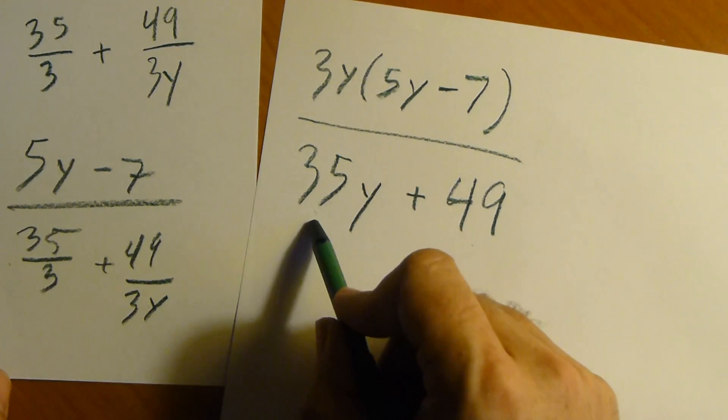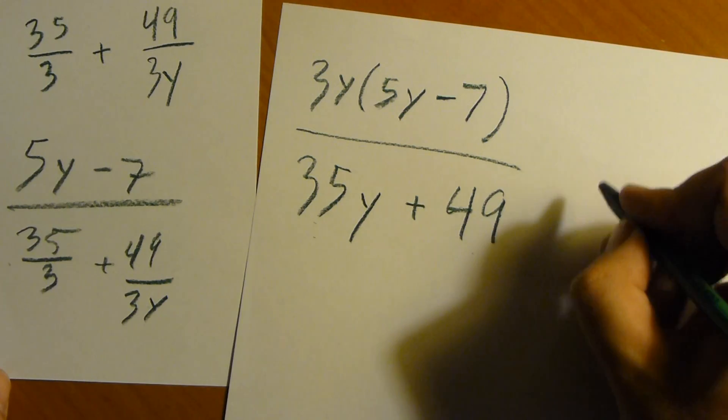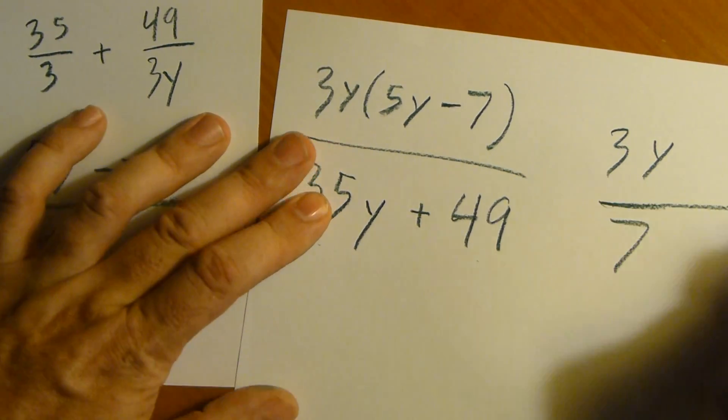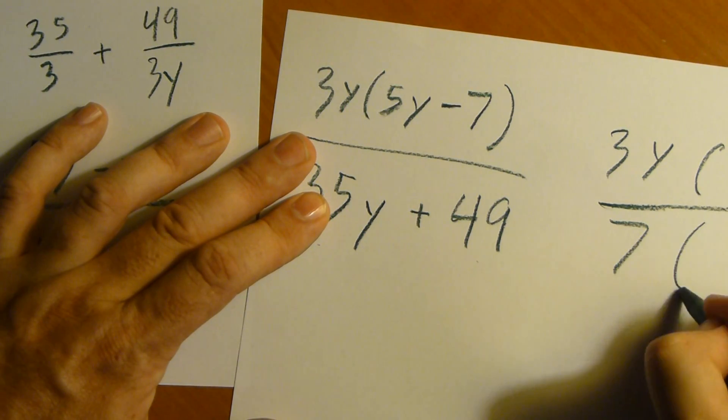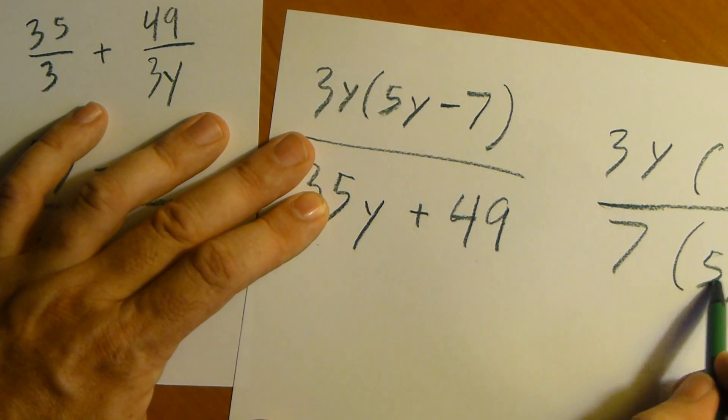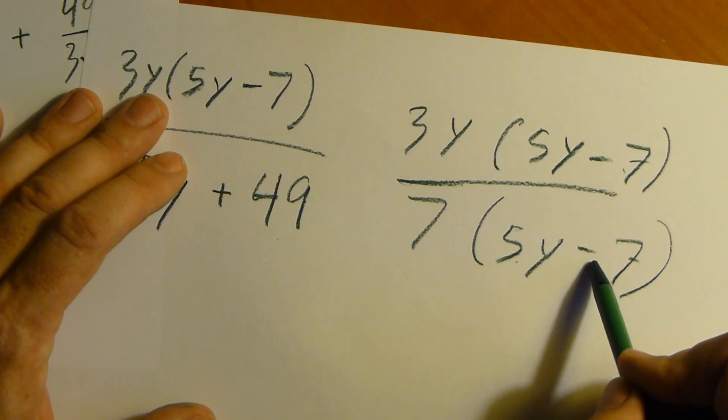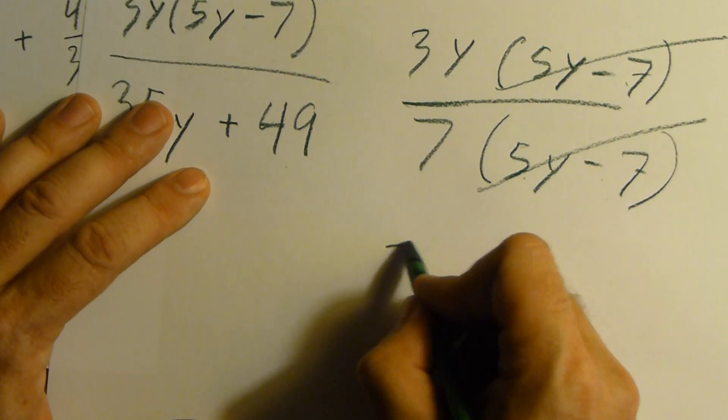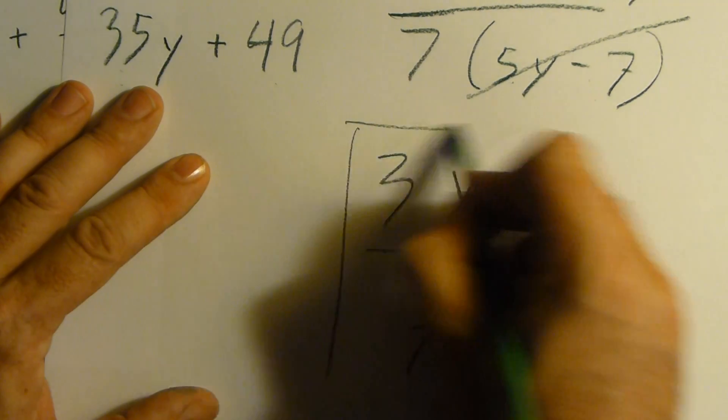Okay, so let's see, we can factor out a 7 out of both these terms. That would give us, well, let's see, 3y over 7, 5y minus 7 over, oh, look at that. We have a 5y minus 7 over 5y minus 7. Those two will cancel out. We're left with 3y over 7 as our final answer.